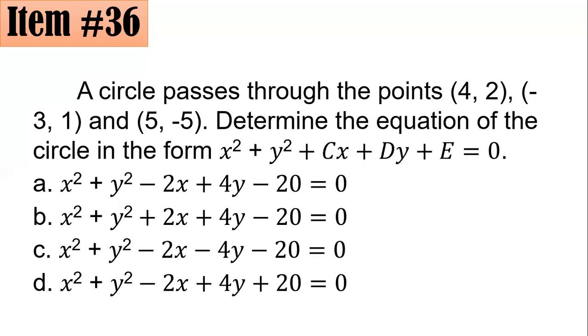There are many ways of doing this. You could substitute these values and perform elimination, or you could test each choice and check if (4, 2), (-3, 1), and (5, -5) satisfy them. If all three points satisfy the equation, then that is correct.